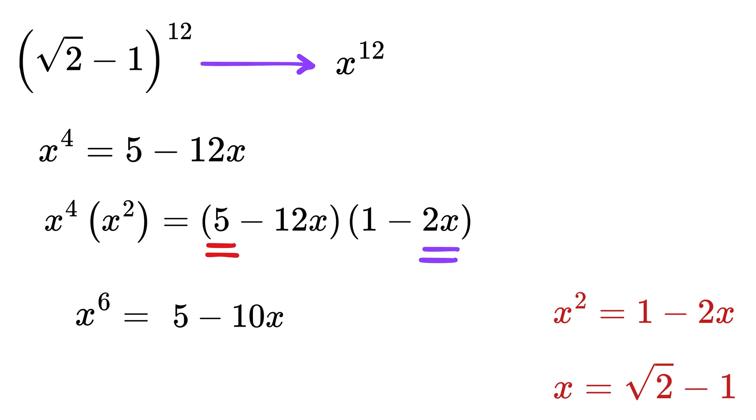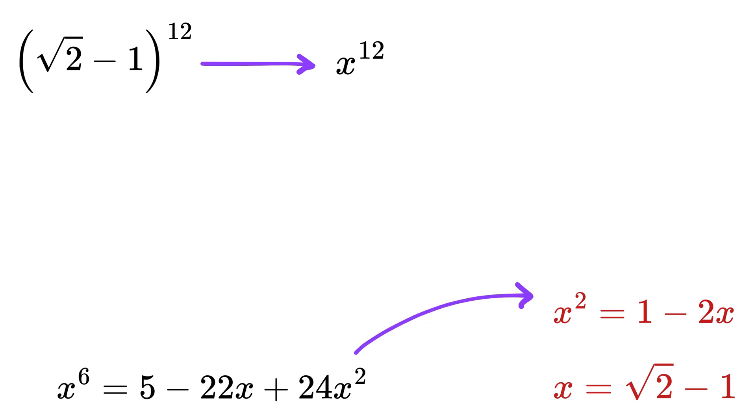Now let us multiply the right-hand side term by term. This will be 5 - 10x - 12x + 24x^2, so it will be 5 - 22x + 24x^2.